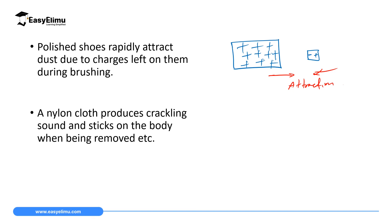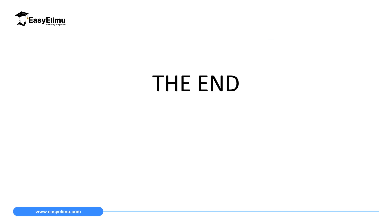Another example is an iron cloth, which produces a cracking sound and sticks to the body when being removed. Whenever you wear a nylon coat and do vigorous activity, removing it produces a cracking sound and sometimes even flashes of light. This is because the nylon cloth wrapping against your body generates static charges, which can produce sound or even light. That is the end of our lesson today; in the next lesson we will discuss more categories of forces.